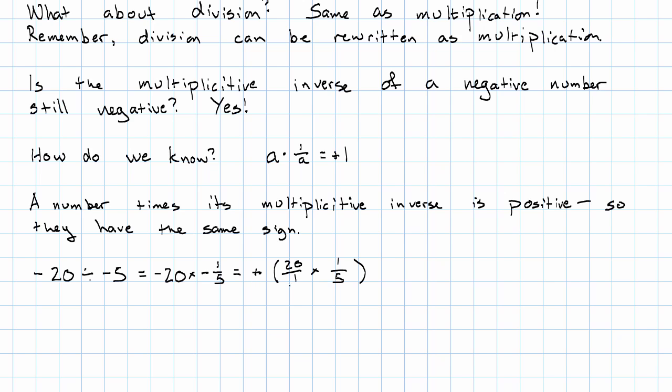Positive, multiply the absolute values. And so that's just 20 over 5, which is 4. This is figuring this out by actually rewriting as multiplication.